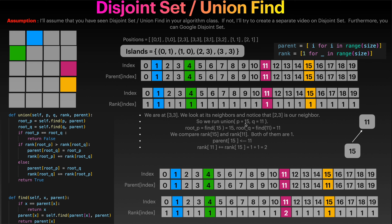So we will be running union where p will be 15 (that's 3,3) and q will be 11 (that's 2,3). We run find(15): since parent of 15 equals 15, the root is 15. We run find(11): since parent of 11 equals 11, the root is 11. We look at the rank for both 15 and 11 - both of them are 1.